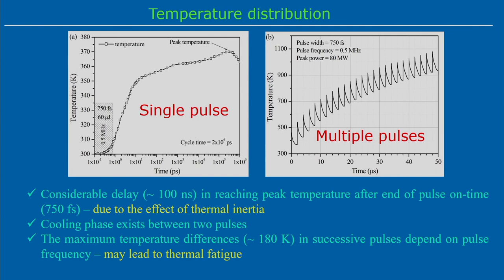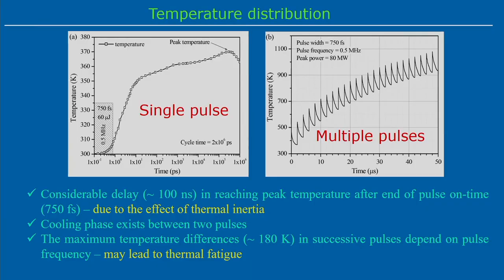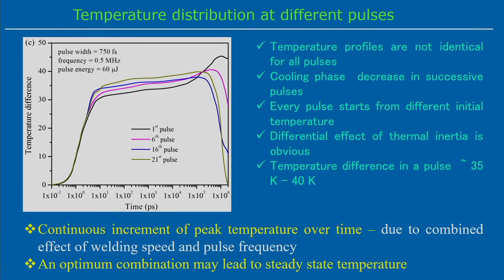A cooling phase exists between the two pulses, with temperature lowering during that interval. There is a considerable delay — almost 100 nanoseconds — in reaching peak temperature after the end of pulse-on time, due to the thermal inertia effect. Maximum temperature differences between successive pulses can be around 180 Kelvin, depending entirely on the pulse frequency being used. If pulse frequency is very high, the gap between maximum temperature differences can be reduced, but continuous temperature cycling — increasing then decreasing — may induce thermal fatigue in the material.